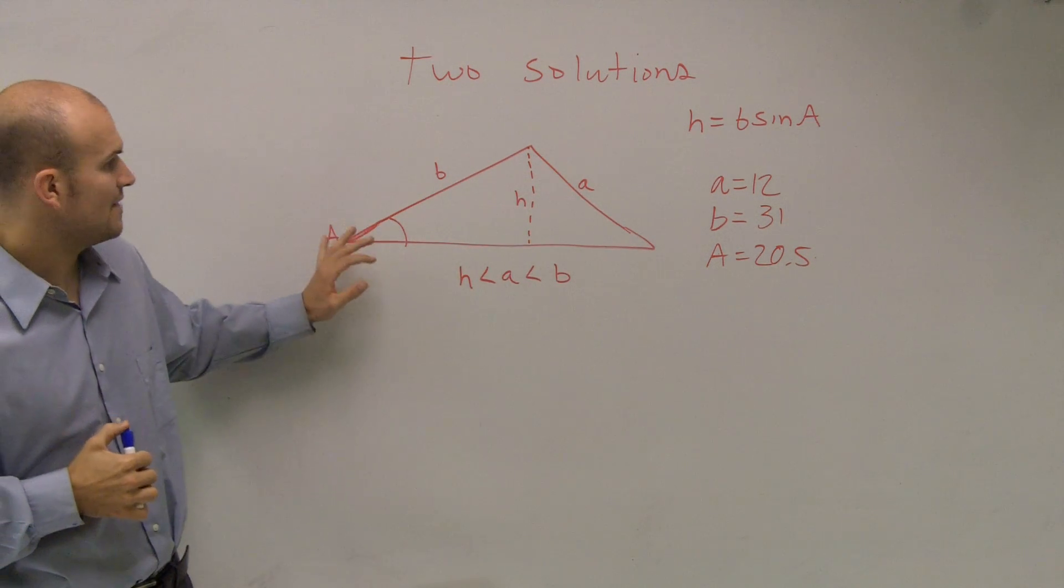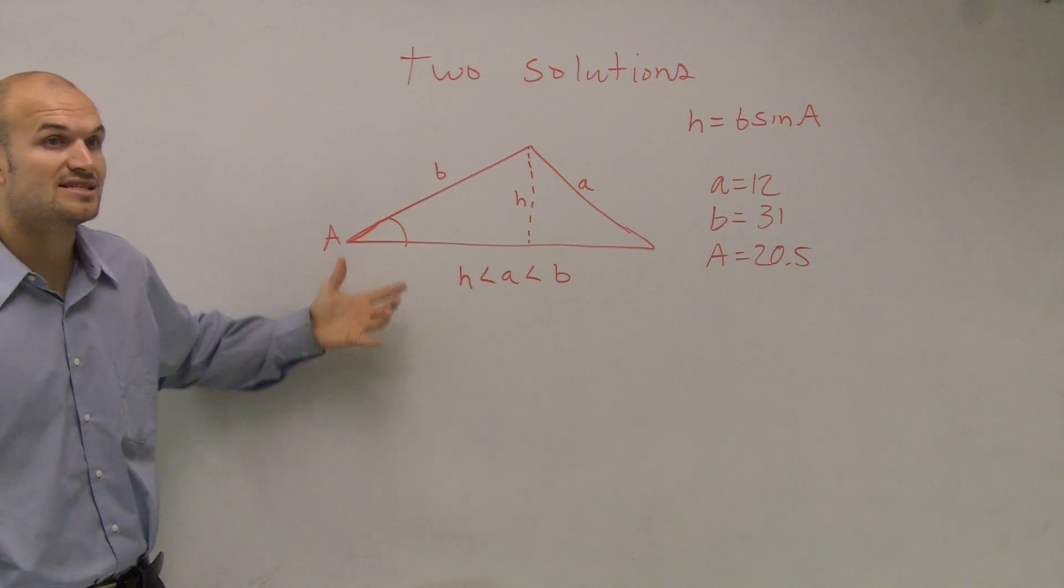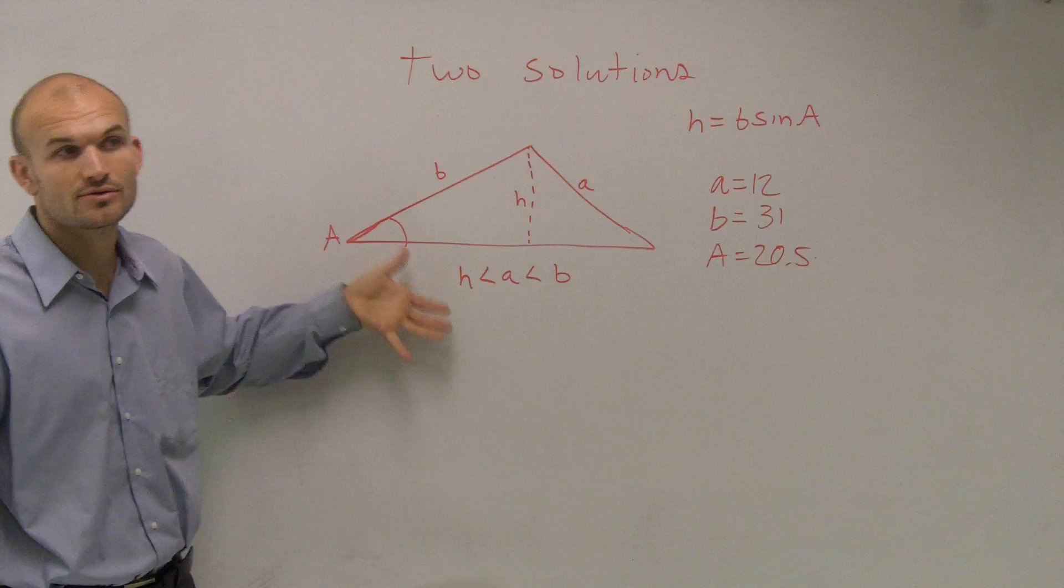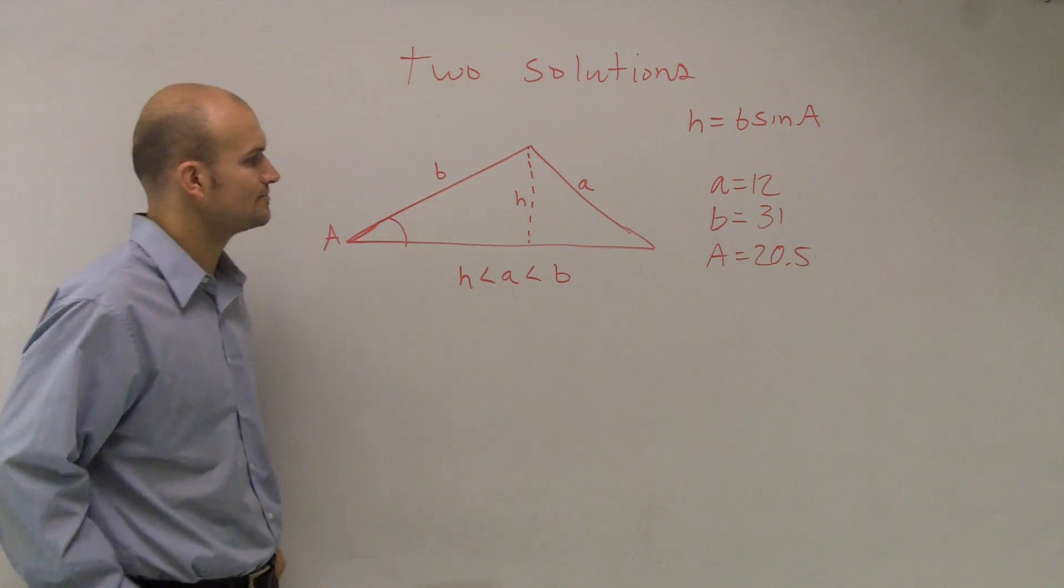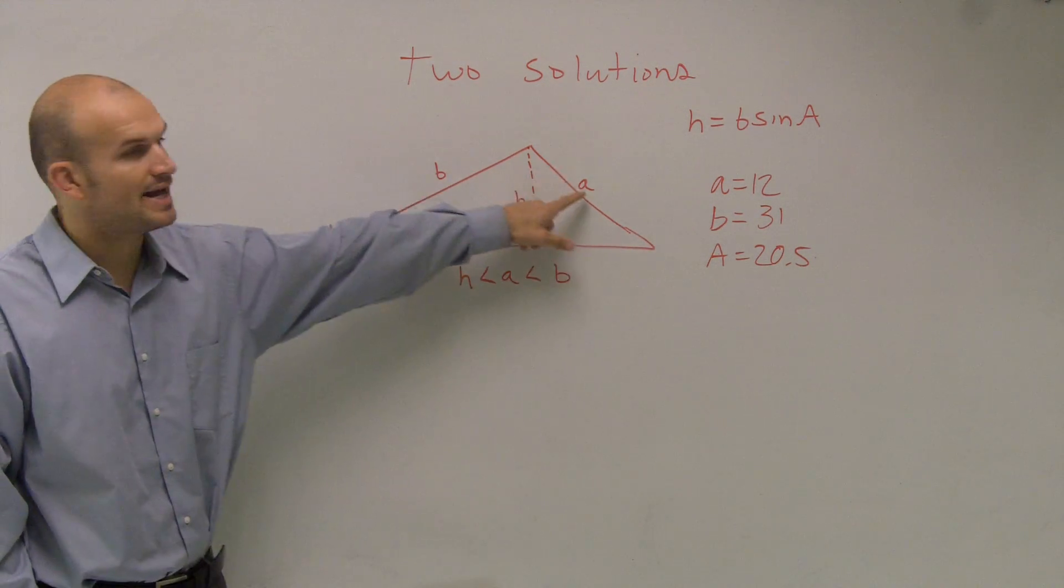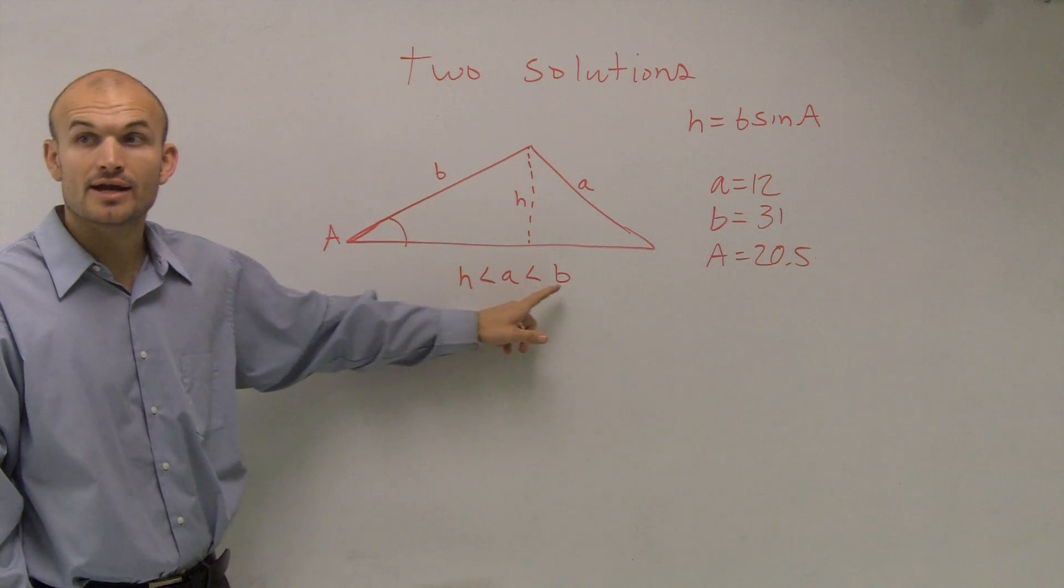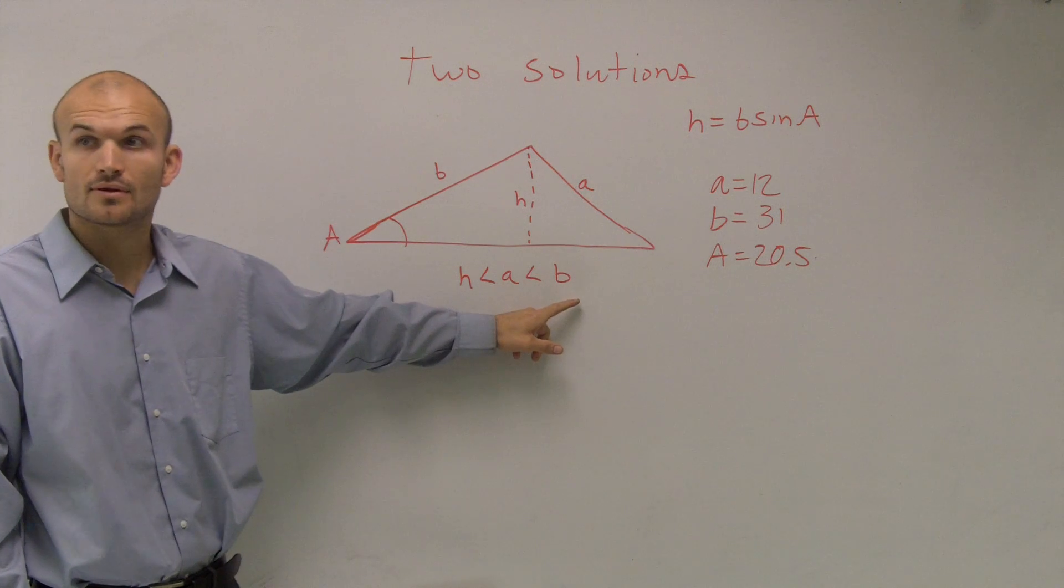So looking up here, I have A and B. Now for it to be two solutions, my angle that I've been given has to be acute. So we're going to be looking only at an acute angle. And the next thing is that opposing side A has to be between the height and our other side B.